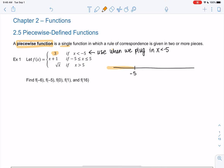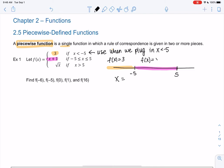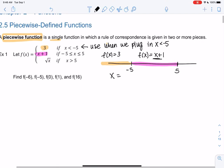So the function, anytime we plug in anything over here, we'll say 3. And then the next piece, we're going to use from negative 5 to 5. Anytime we plug in anything between negative 5 and 5, we're going to plug into x plus 1 instead. And then when we get beyond 5, anything bigger than 5, we're going to go ahead and plug into the square root of x.